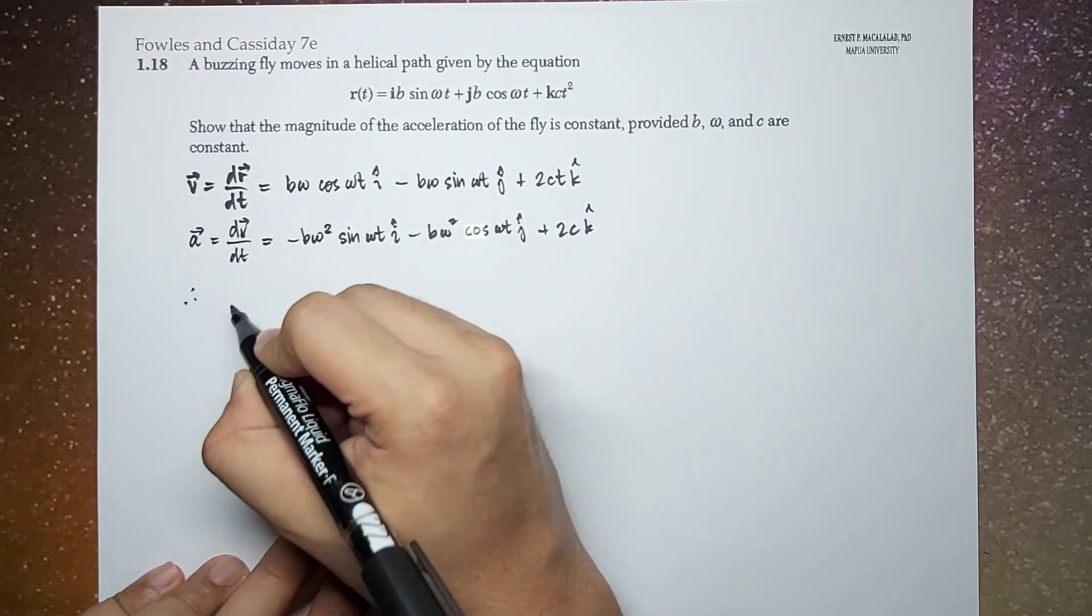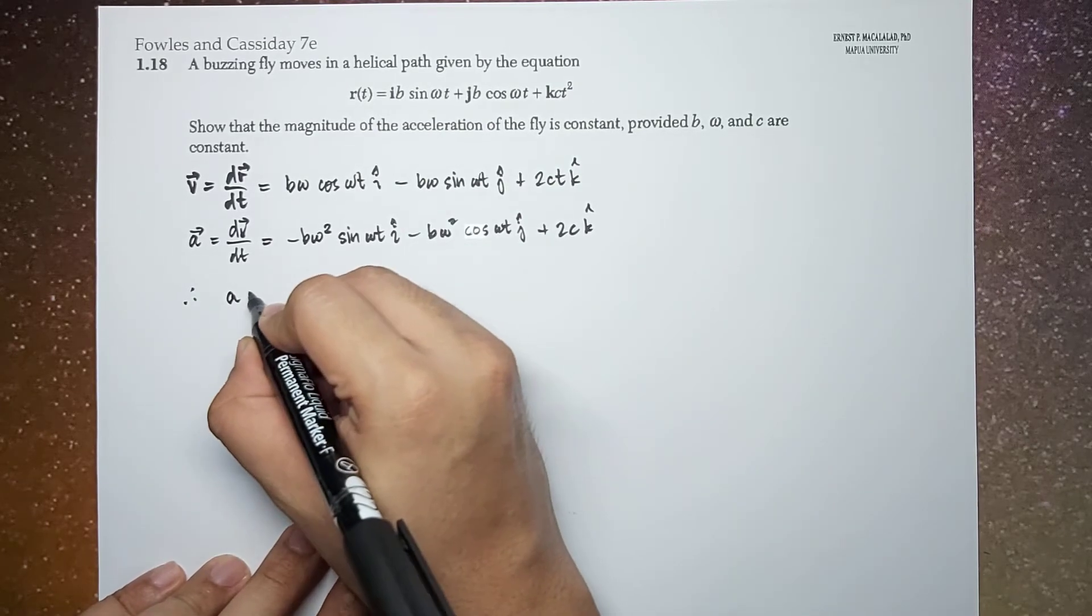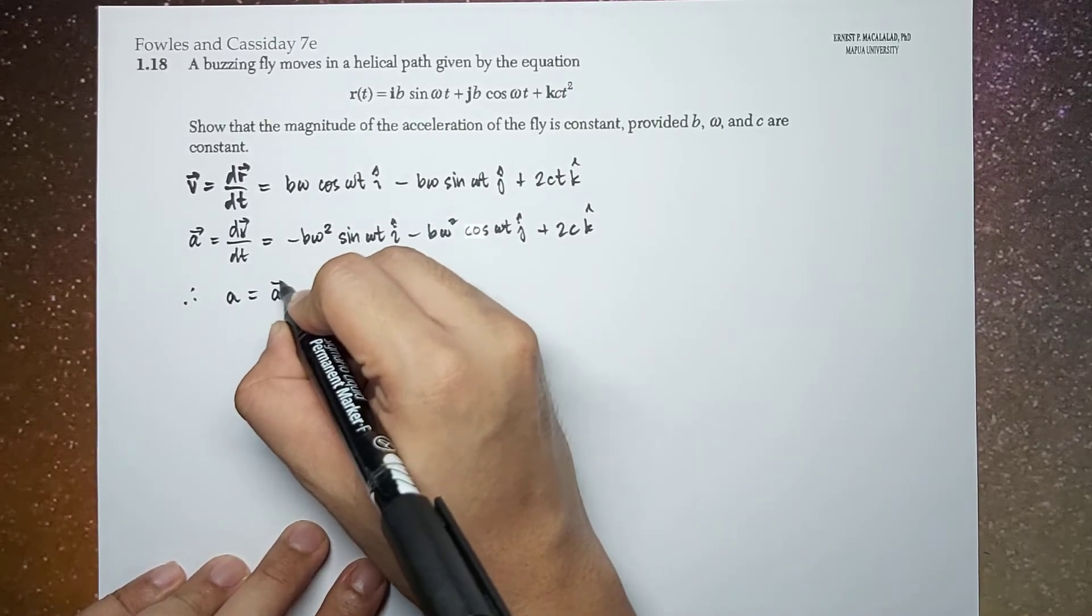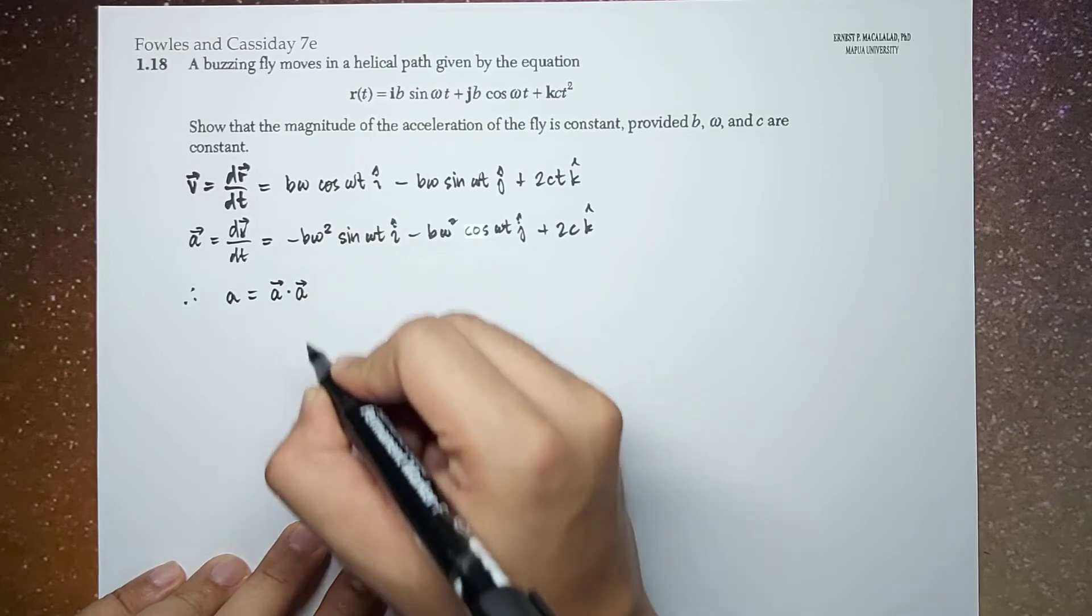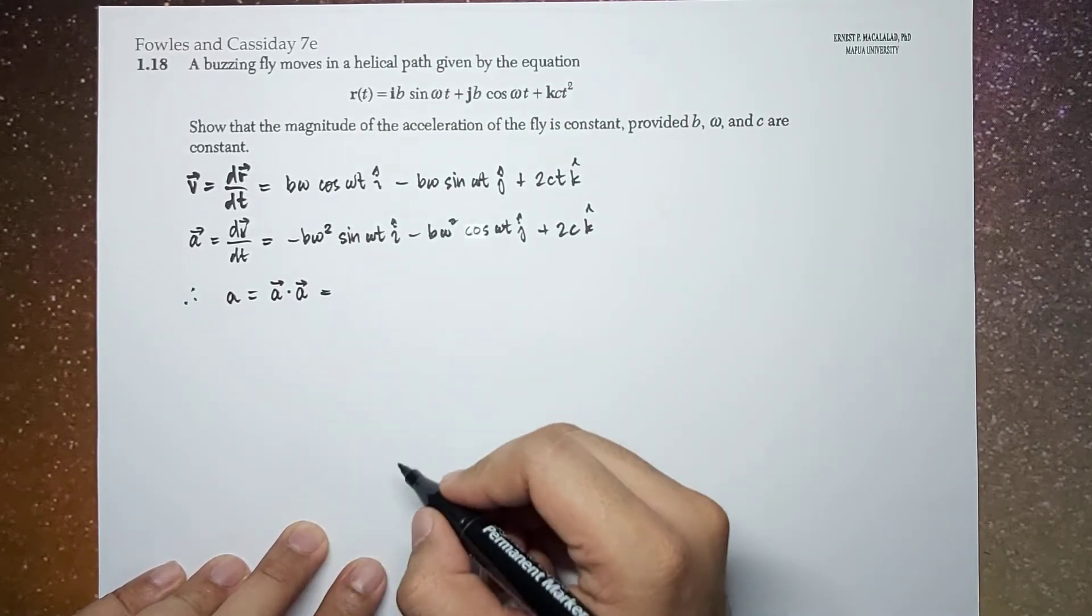So therefore, the magnitude of the acceleration will just be the dot product of your acceleration with itself.